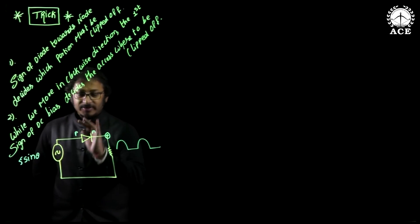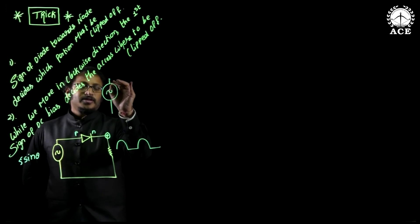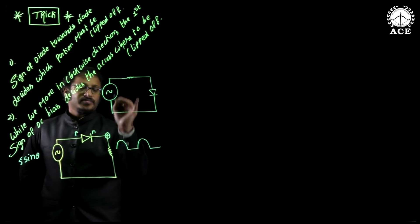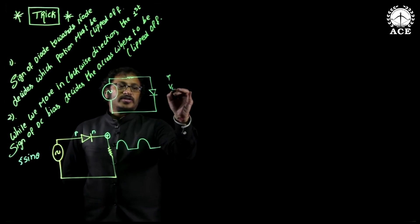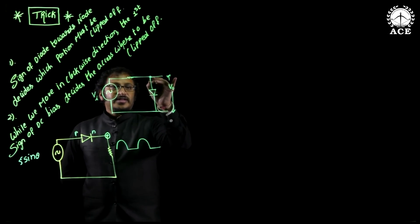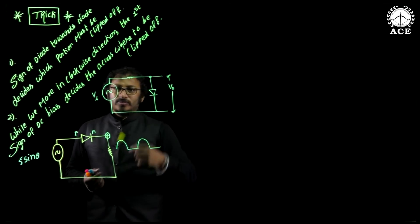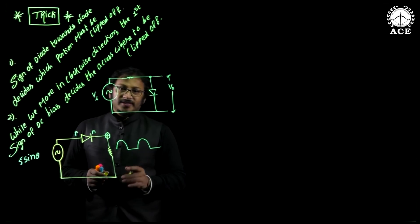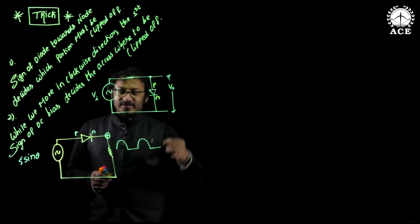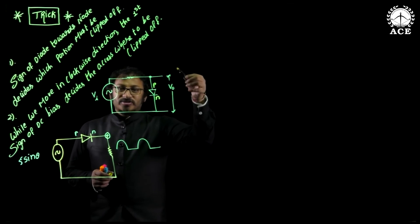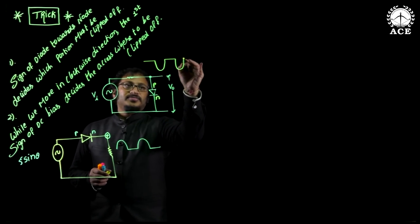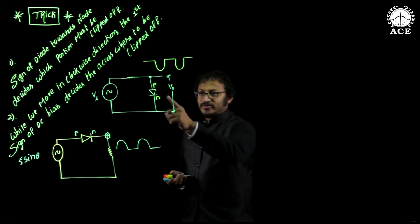In a similar way, let me take another circuit where this is V0 and this is VI — the output is taken here, so this is the node. Tell me dear students: this is P-type semiconductor and this is N-type semiconductor. Towards the node, which is connected — P-type or N-type? P-type. Therefore, the positive portion needs to be clipped off. Therefore, output positive portion must be zero, and only the negative portion must be present at the output side. So this must be the case for this circuit.